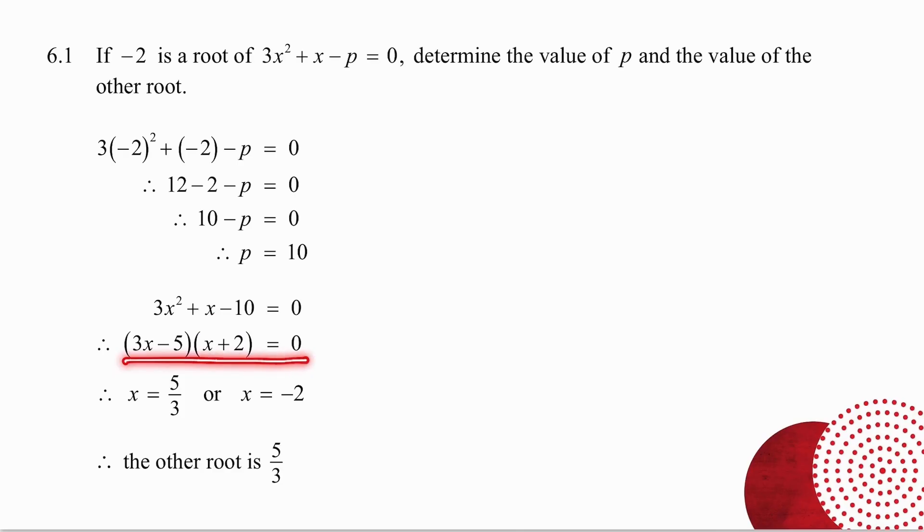Factorize the trinomial and get the two values of x. They told you that minus two is a root, which means one of your answers must be minus two. The question asked you for the value of the other root, so the other root is 5 over 3.